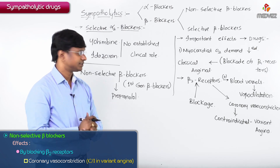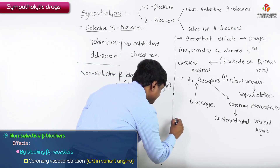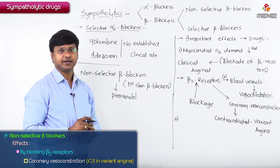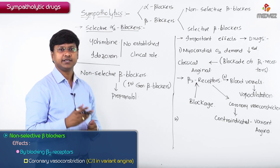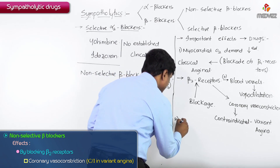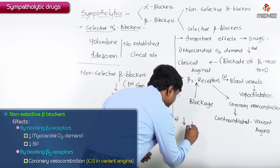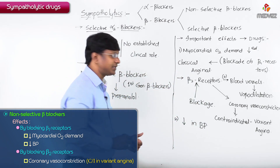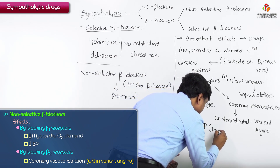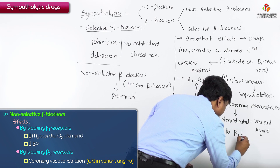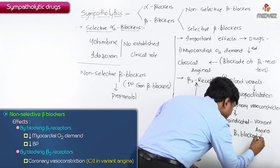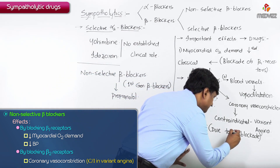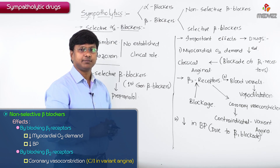Another effect of non-selective beta blockers is that they decrease blood pressure. This decrease in blood pressure is mainly due to beta 1 receptor blockade.